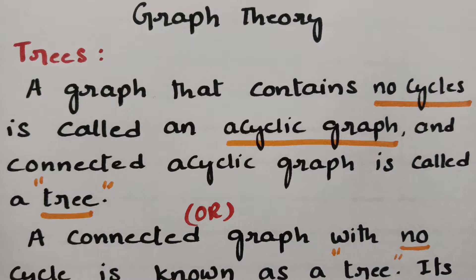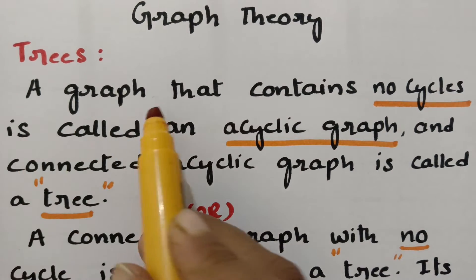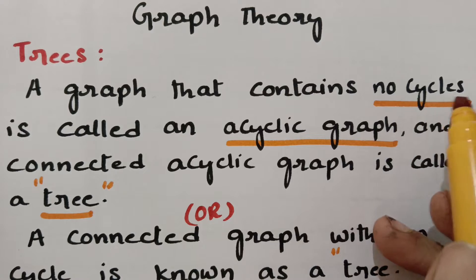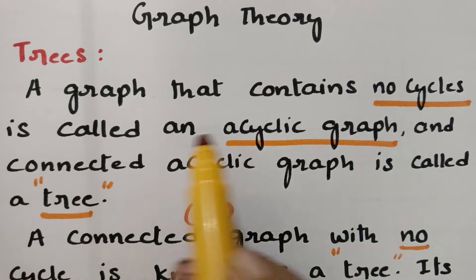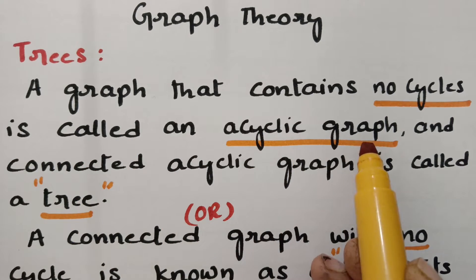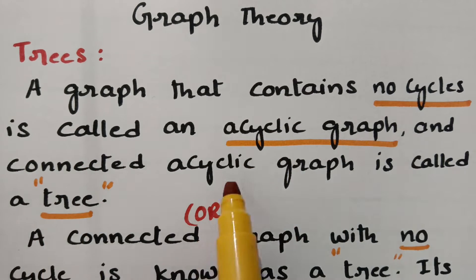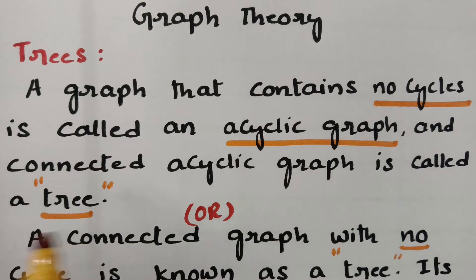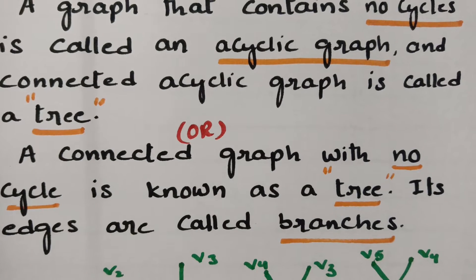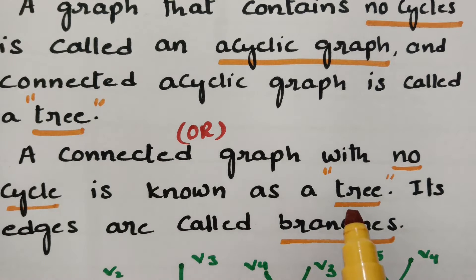This video is on trees from graph theory. A graph that contains no cycles is called an acyclic graph, and a connected acyclic graph is called a tree. In other words, a connected graph with no cycle is called a tree.